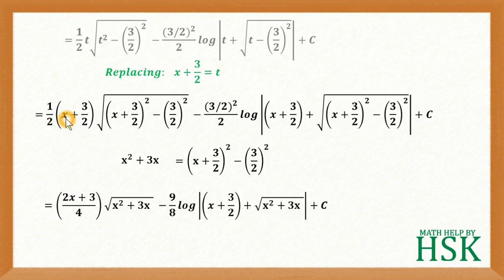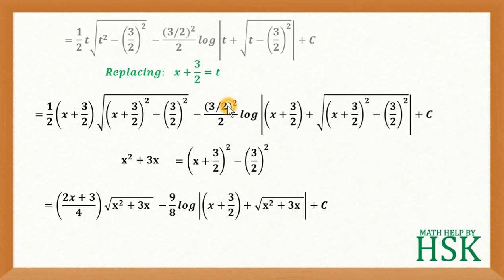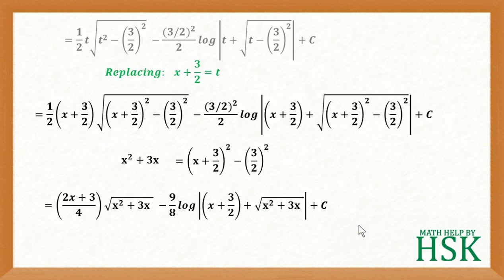Now 1/2 times (x plus 3/2) simplifies: x plus 3/2 written as (2x plus 3)/2, and both terms multiply to give 4 in the denominator. So (3/2)² equals 9/4, and 4 multiplied with 2 gives 9/8. My final answer is: (2x plus 3)/4 times square root of x squared plus 3x, minus 9/8 times log of (x plus 3/2) plus square root of x squared plus 3x, plus c. This is my required answer.